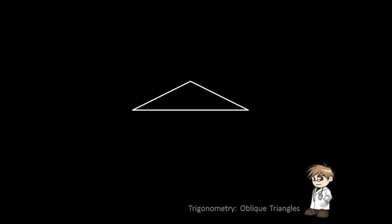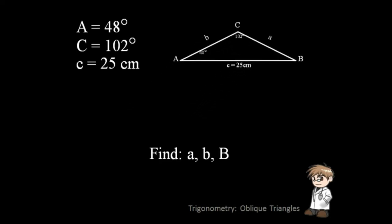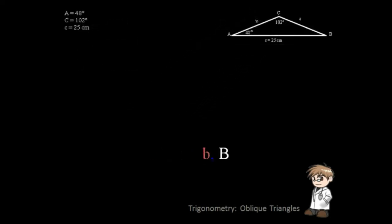You are given angle A, angle C, and side C. To solve the triangle, you have to determine the unknown sides and the third angle. Let us start with the easiest.